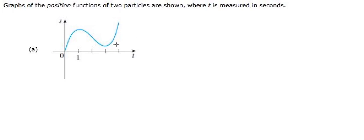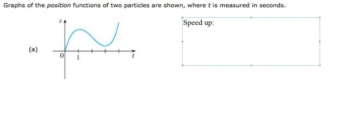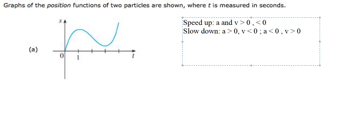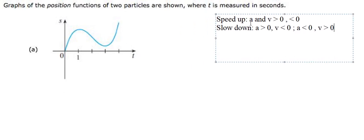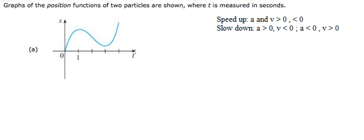Here is the graph of the position function. I will show the technique for how to find which one is speeding up and which one is slowing down. Before we analyze the graph, we need to know that when we have speed up, that is when A and V are both positive at the same time, or they are both negative at the same time. When they slow down, A is positive and V is negative, or A is negative and V is positive. That is the technique to analyze which one is speeding up and which one is slowing down.